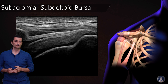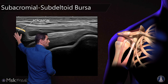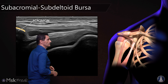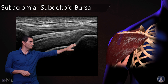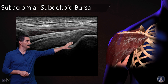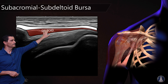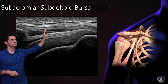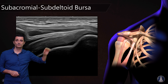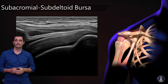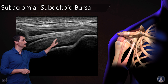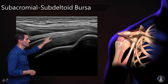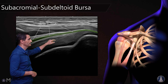Remember that the subacromial-subdeltoid bursa will be located between the deltoid and the supraspinatus. So this will be the acromion at this level, and this will be the deltoid muscle located here. Between the deltoid and the supraspinatus will be located the bursa, and you can see it with ultrasound like this double hyperechoic line here.